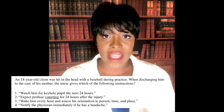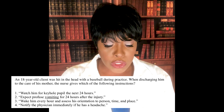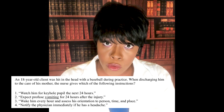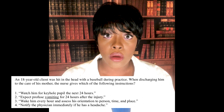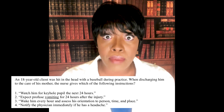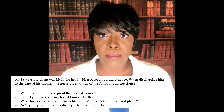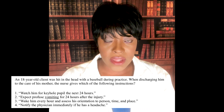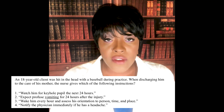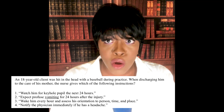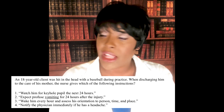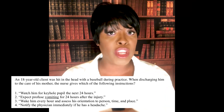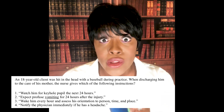Let's look at the other choices. One — watch for keyhole pupil: that instruction would be for a patient who had an iridectomy. Two — expect profuse vomiting: absolutely not. Profuse vomiting after that type of injury indicates increased intracranial pressure — that is bad. Tell the family to call 911 immediately if that happens. Four — notify the physician if he has a headache: of course he'll have a headache after being hit in the head with a baseball. That's expected. Number three is correct because level of consciousness is your first indicator that something is wrong.